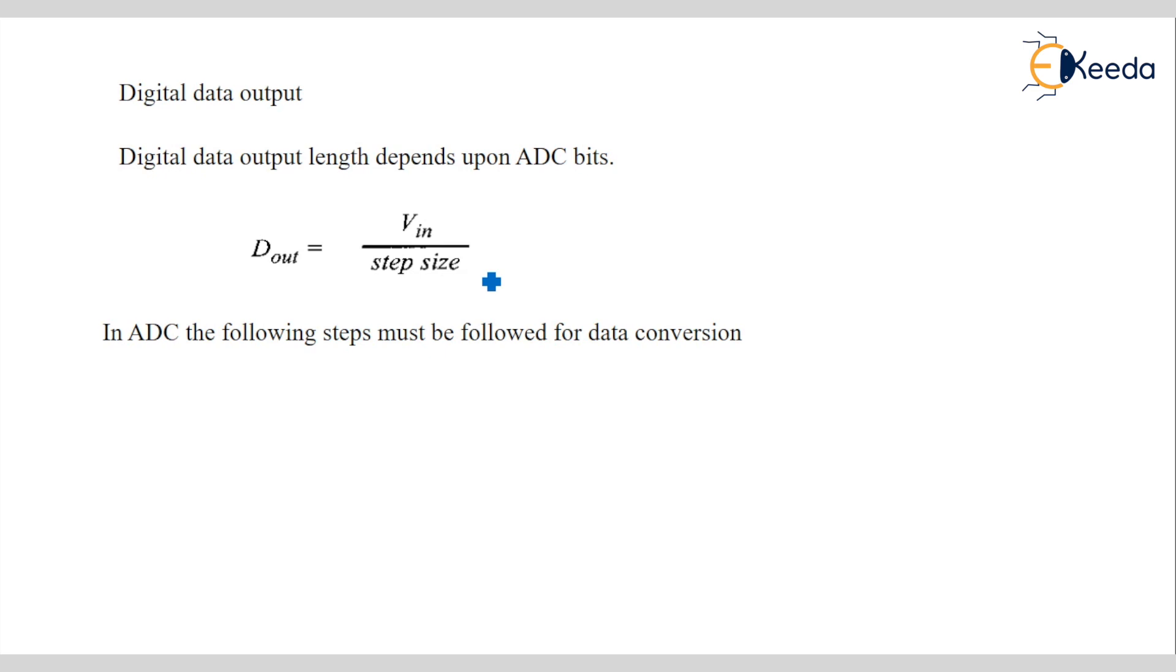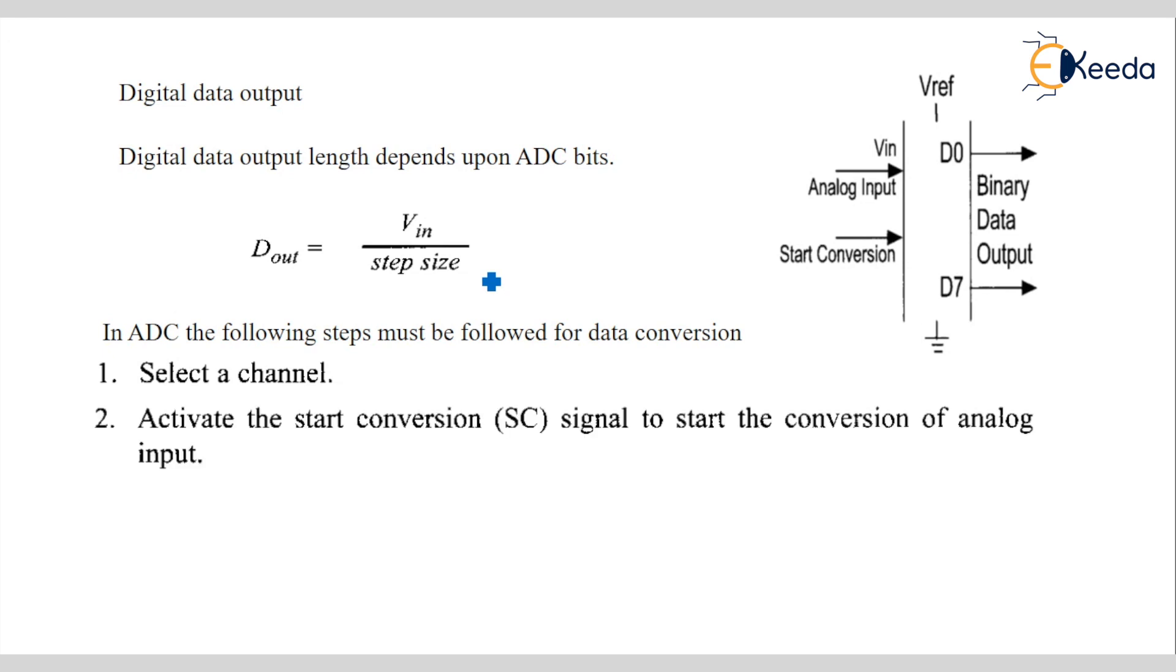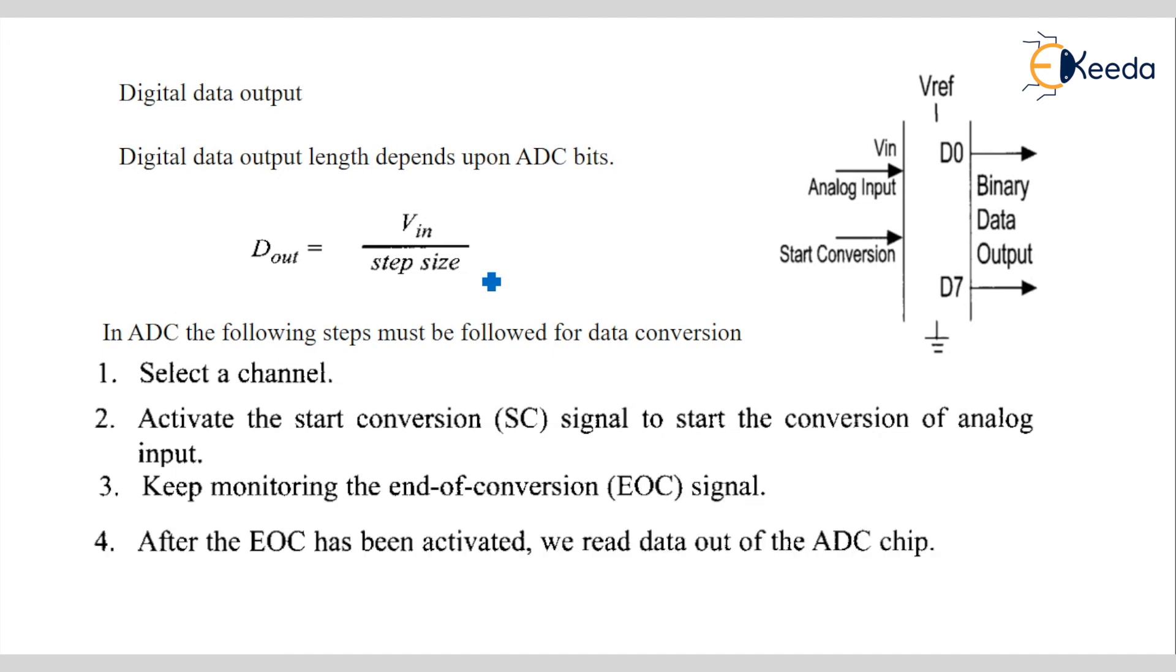In ADC, following steps must be followed for the data conversion. First, observe the Vin. Select the channel. See in a little channel because in earlier what I explain, there are more than four channels are available. Three channels are available. So, we have to select from the select which channel we have to consider for the conversion. Then active the start conversion signal to start the conversion of analog blocks input. Keep monitoring the end of a conversion signal. After EOC has been activated, we read the data out from the ADC chip. Thank you student.